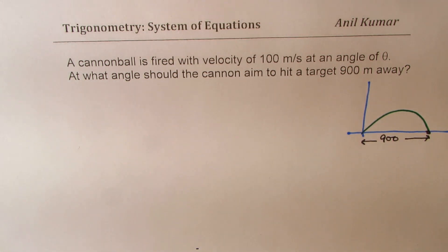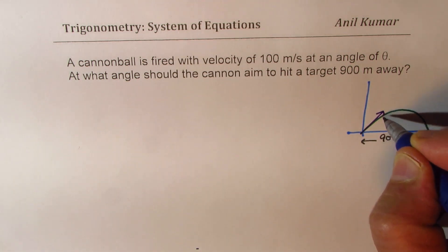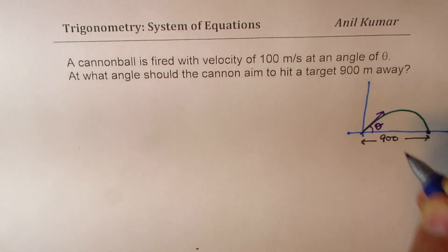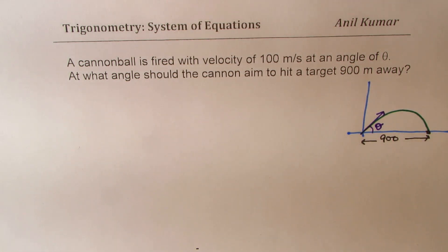We are also given that this angle which the cannonball makes is theta. So this is the angle at which it is fired. So this angle is theta for us. We need to find this angle. Now, there are a couple of things which will help us to understand and solve this particular question.